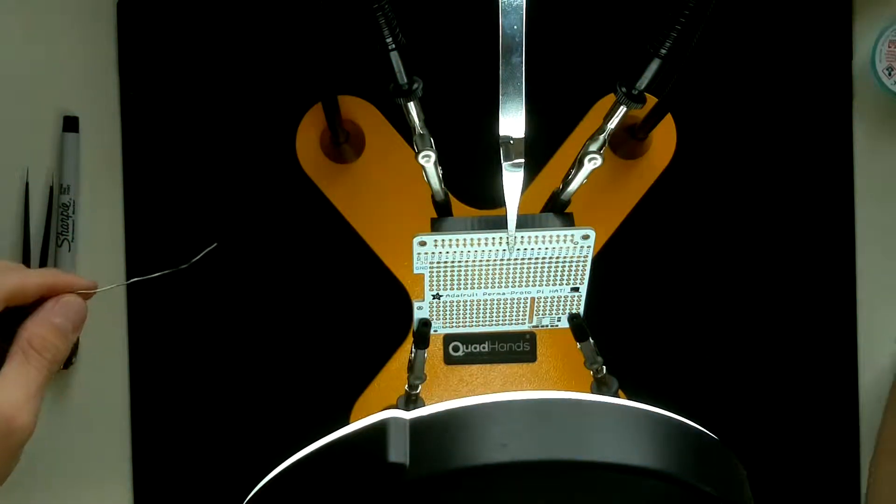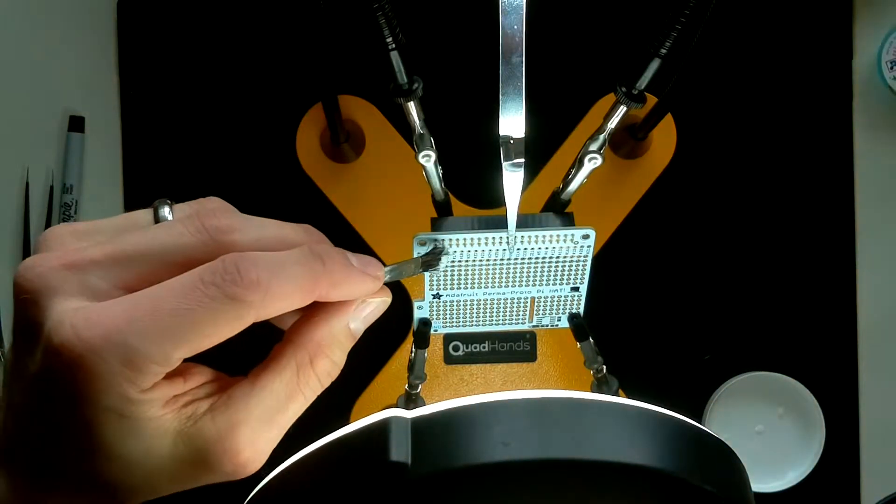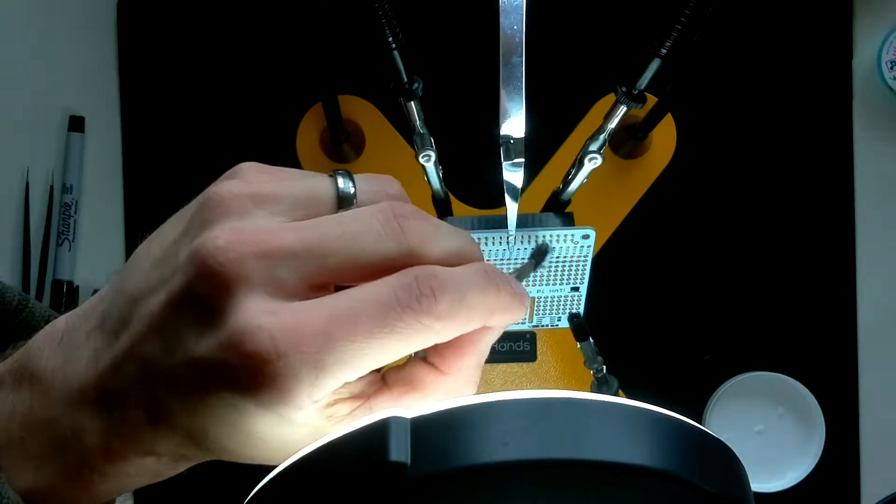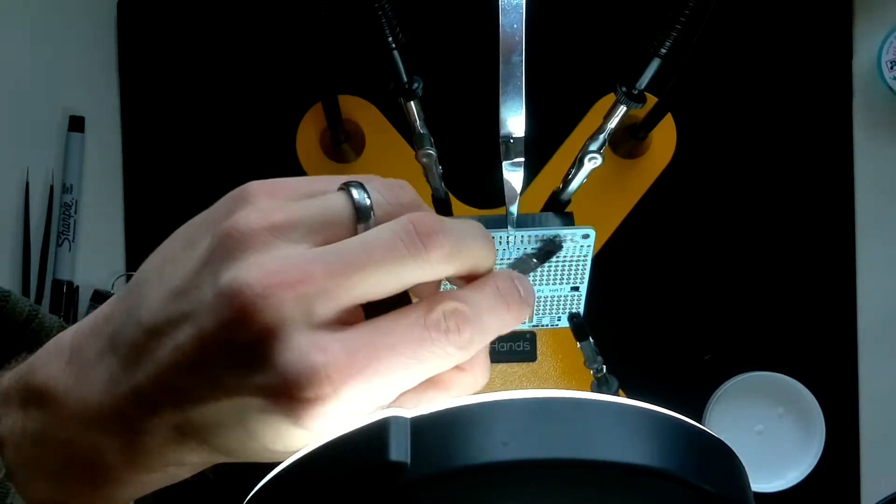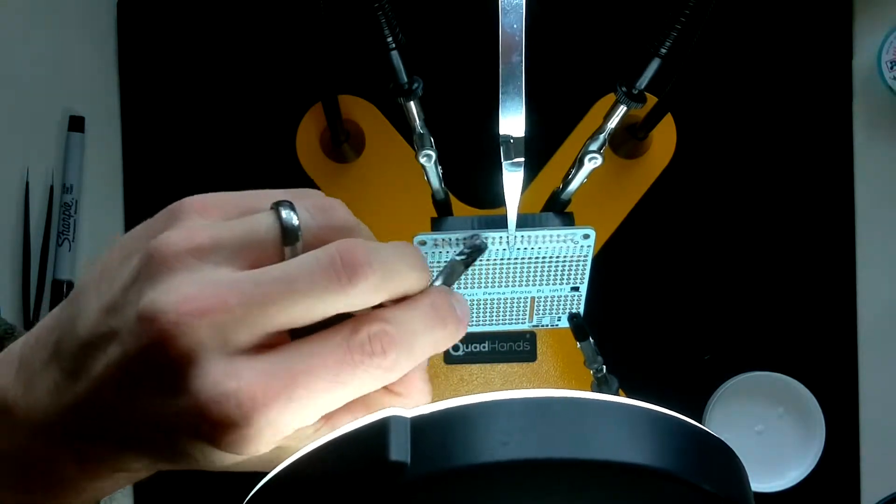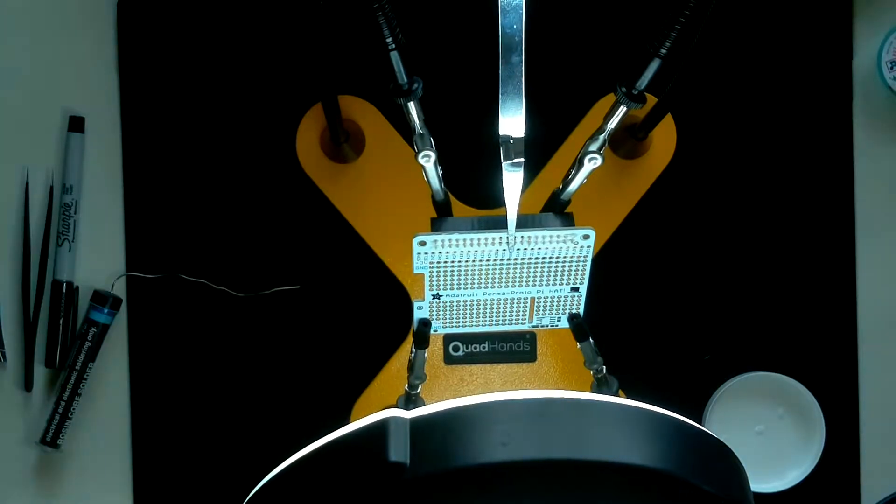The reason you don't want to touch your solder to your soldering iron is because you can end up with what's called a cold solder joint. That means basically that you've melted some solder into the area but there can be a thin layer of air insulating the pin and the copper ring from the solder itself, meaning that you don't have a good or reliable connection.